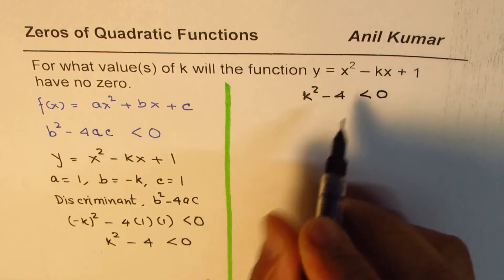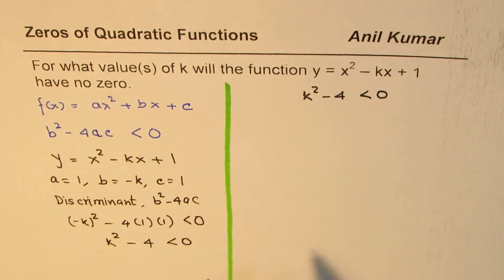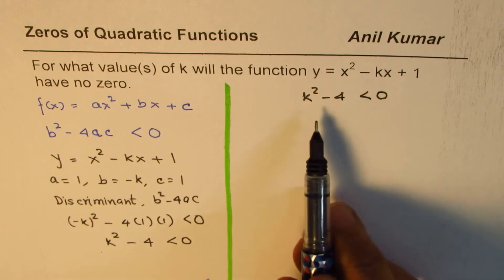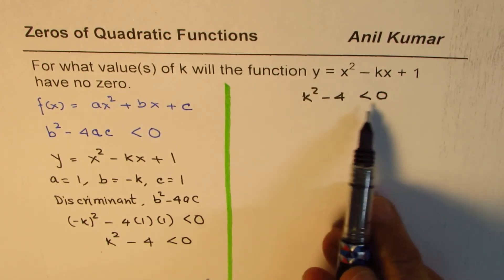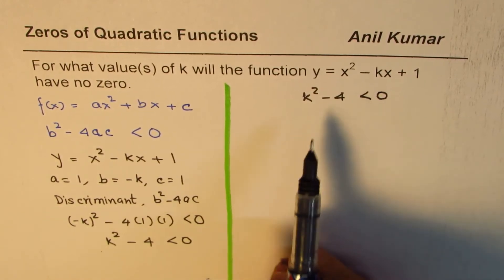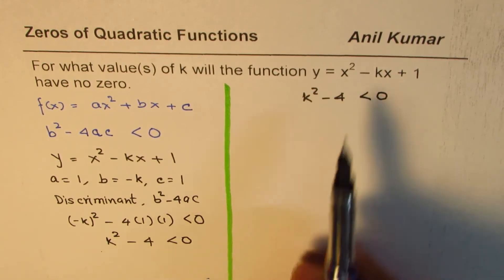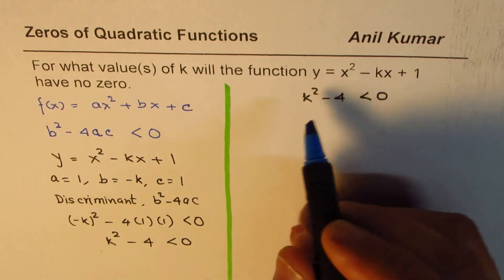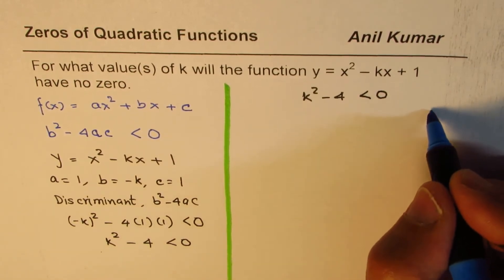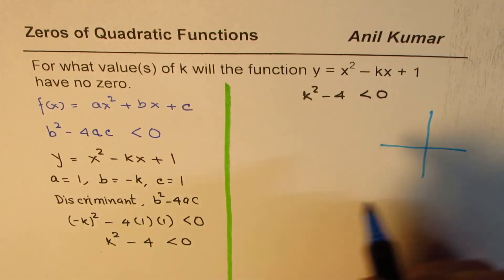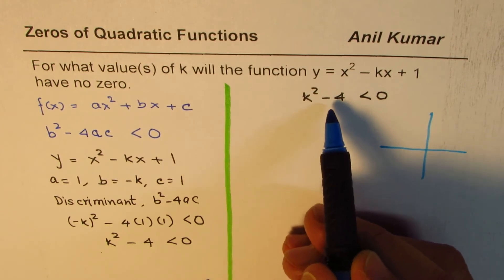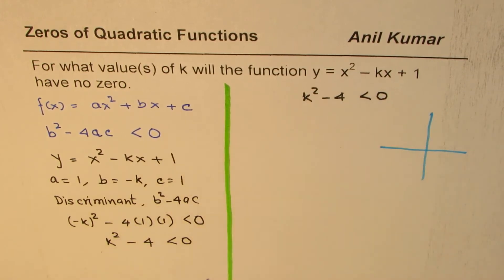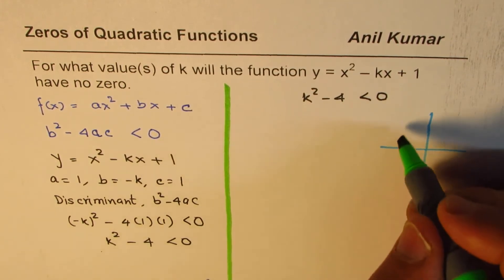When we say k² - 4 < 0, we could think graphically - it is also a parabola. Let me sketch here which has been moved four units down, opening upwards, kind of like this.